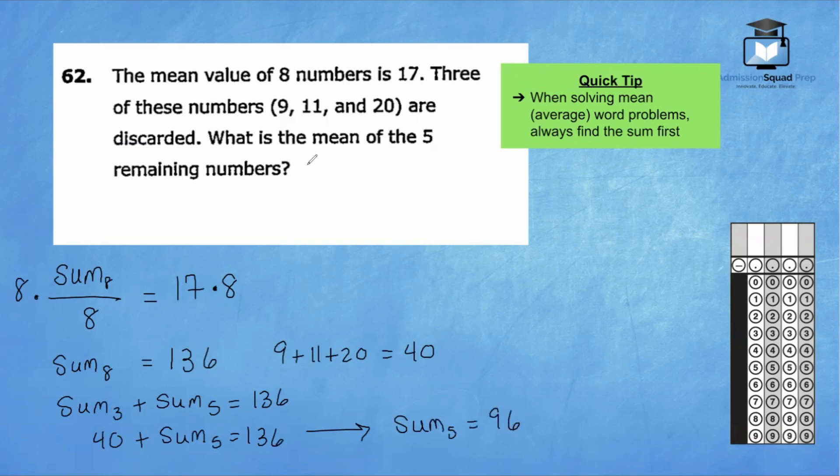The question asks us to find the mean of the remaining five numbers. Remember, to find the average of something, you're going to take the sum, which is 96 here, and then divide by the number of numbers. So since we have five numbers, we have 96 divided by five. That's going to give us five into nine goes one time, remainder four. Five into 46 goes nine times, remainder one. I like to put a one right next to an additional zero. 10 divided by five is two. So the final answer here is 19.2.